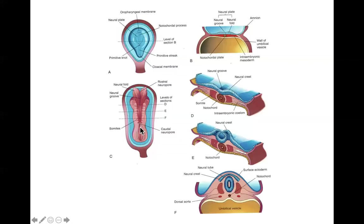At this point in time, the neural tube is still in open communication with the amnion. Amniotic fluid can flow in and it can flow out, and that's very important for the nutrition of the nervous system. The cranial pore closes at about day 25 and the caudal closes about two days after that. This coincides with establishment of blood circulation to the neural tube, which makes perfect sense because before circulation is established, nutrition is all by diffusion. Once circulation is established, the neural pores close and the central nervous system becomes closed off from the rest of the body, never to be opened again.